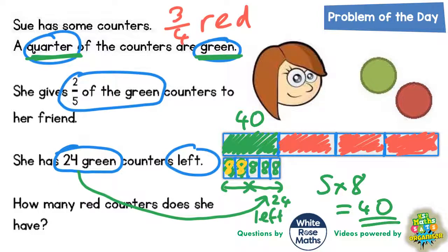But remember, this was worth one quarter of the total amount of counters. So if there was 40 green counters, there must have been 40 in this quarter, 40 in this quarter, and 40 in this quarter. Because all the quarters would all have to have been the same size and all worth 40.